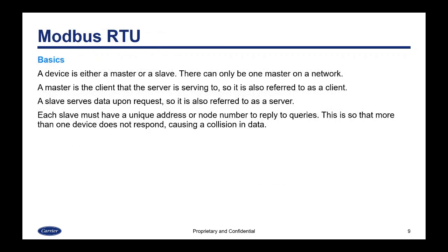With Modbus RTU, a device is either a master or a slave. There can only be one master on a network. A master is the client that the server is serving to, so it is also referred to as a client. A slave serves data upon request, so it is also referred to as a server. Each slave must have a unique address or node number to reply to queries, so that more than one device does not respond, which would cause a collision in data.